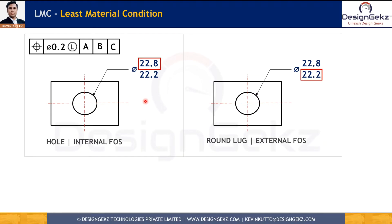Least material condition is exactly opposite to maximum material condition. LMC is the condition of a feature of size in which it contains the least amount of material within the stated limits. For a hole, it has least material when it becomes bigger, so 22.8 is the LMC of the hole. For the external round lug, it has minimum material at the lower size, so 22.2 is the LMC.